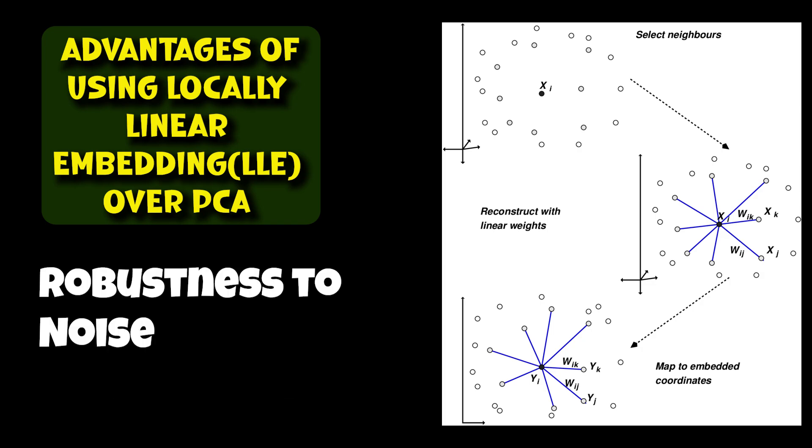LLE is more robust to noise compared to PCA as it considers local linear relationships between data points. PCA, on the other hand, may be more sensitive to noise as it seeks to maximize the variance. Consequently, noisy data can significantly impact the principal components derived from PCA. In other words, PCA may be heavily influenced by the noise and fail to capture the true structure of the data.